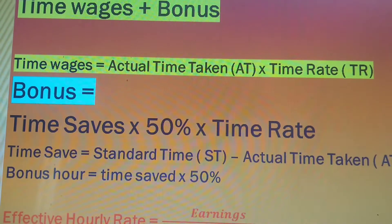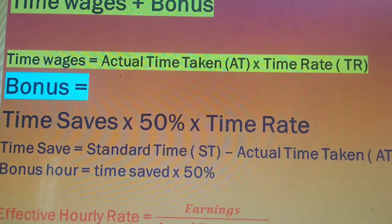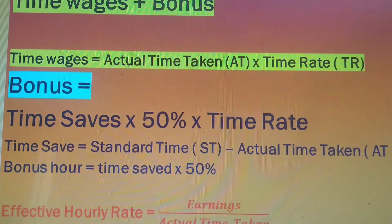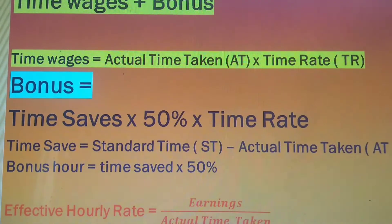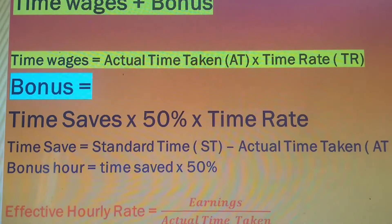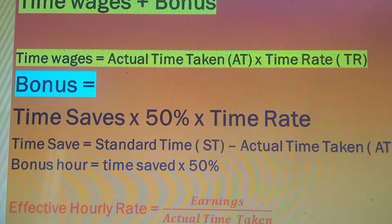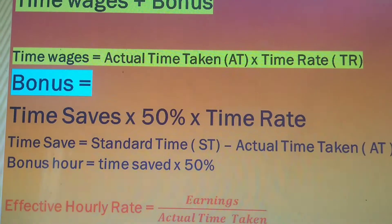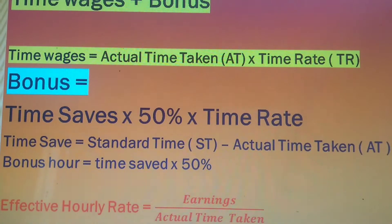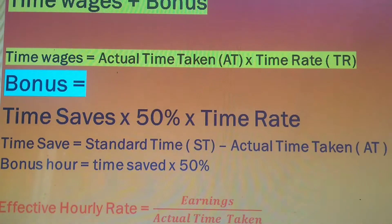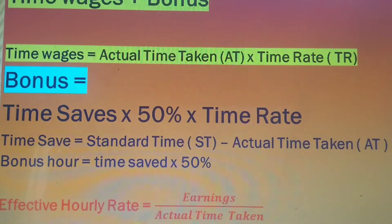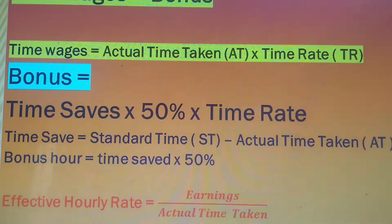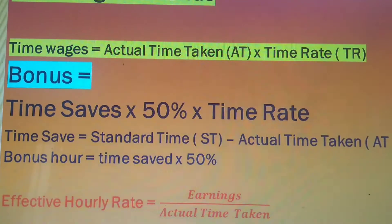The meaning of 'time saved' is the difference between standard time and actual time taken. For every job there is a standard time, which is calculated from past experience. Actual time taken means the time spent by the worker on their work. So time saved is the difference between standard time and actual time taken.